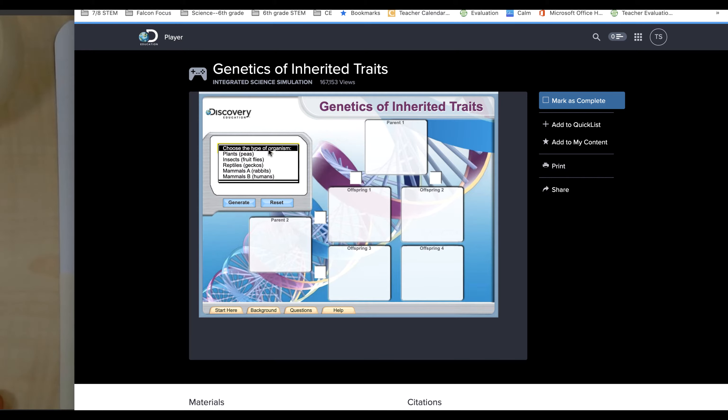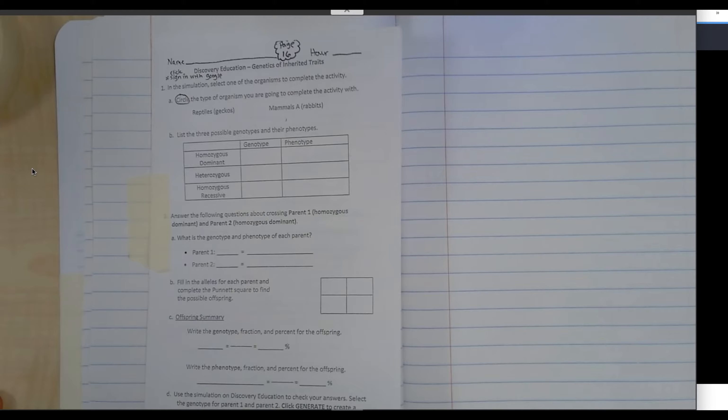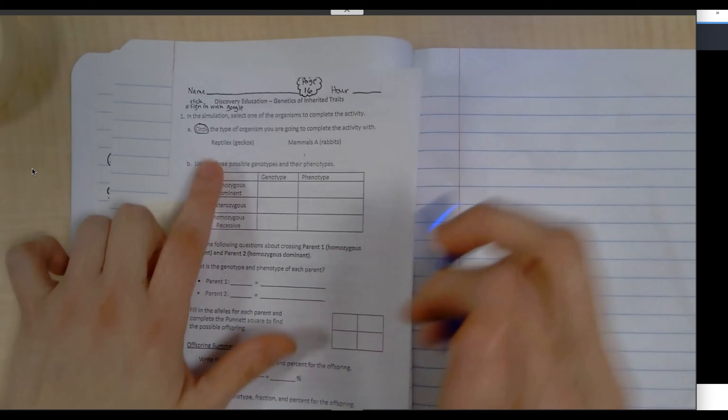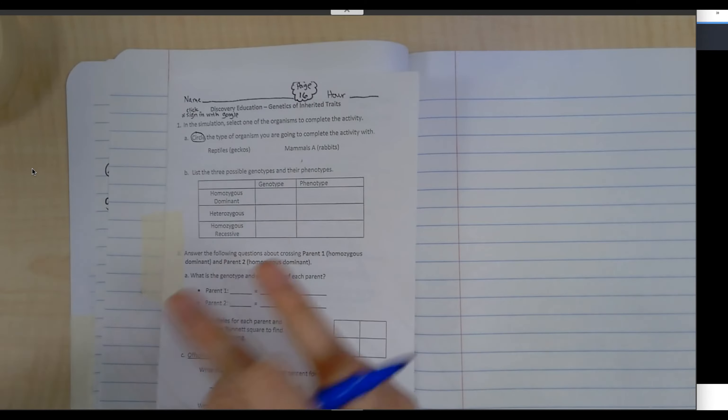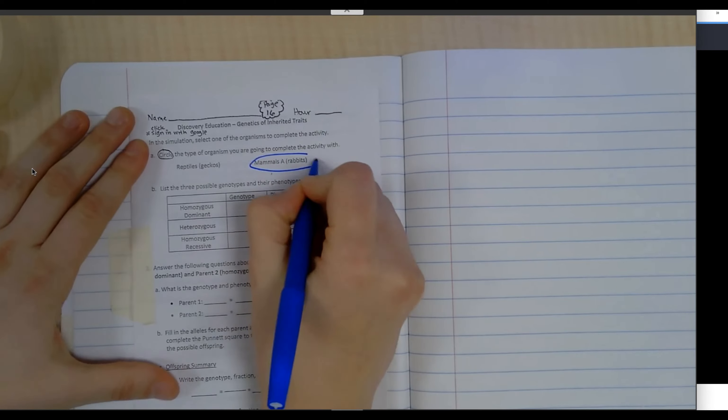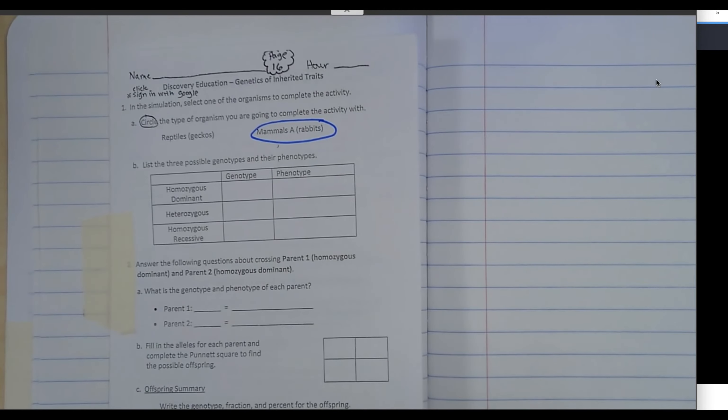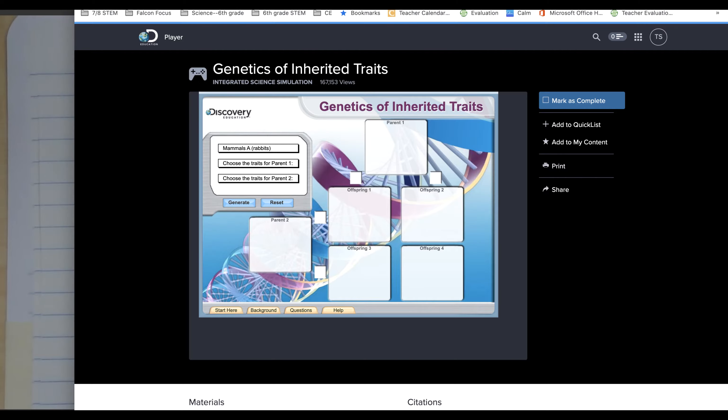I'm going to select Mammal A, which is rabbits. On my notebook I'm going to circle and select that I'm using Mammal A rabbits. All I'm going to use Discovery Ed for right now is just to see what letters I'm going to use.